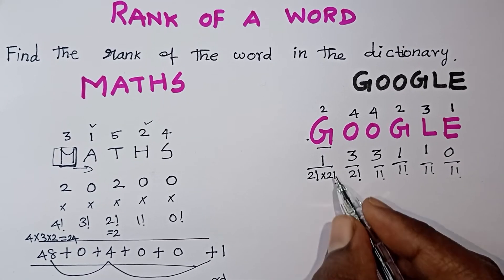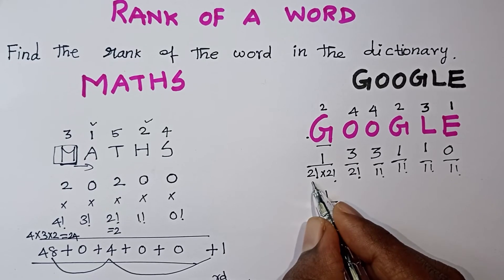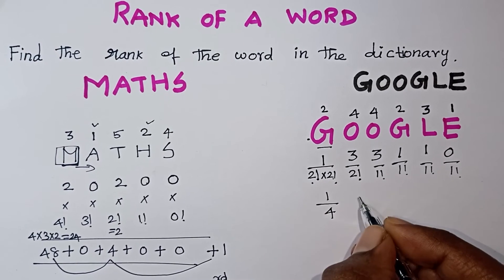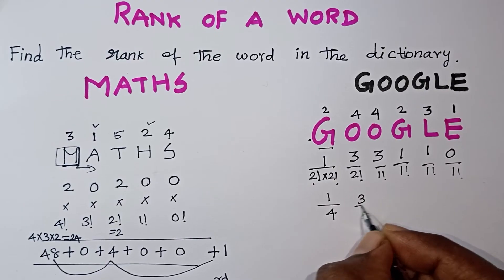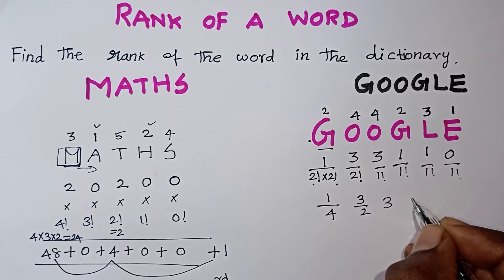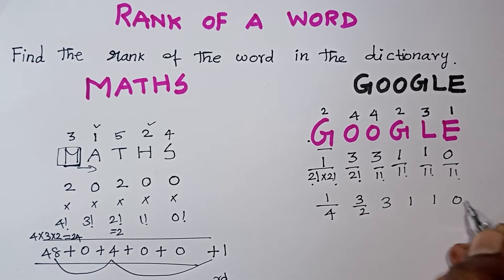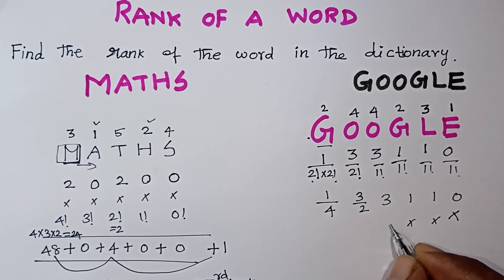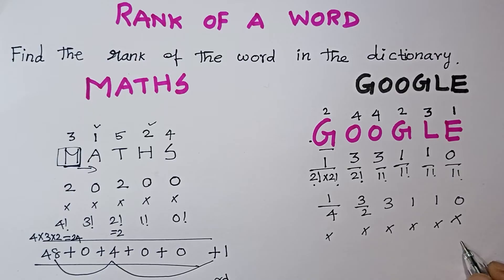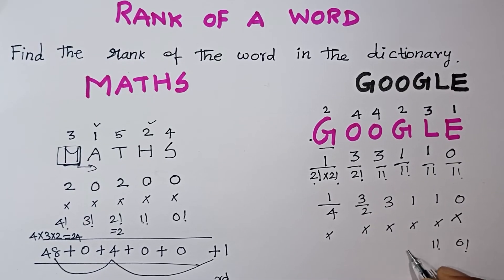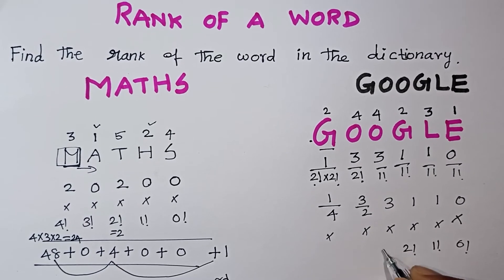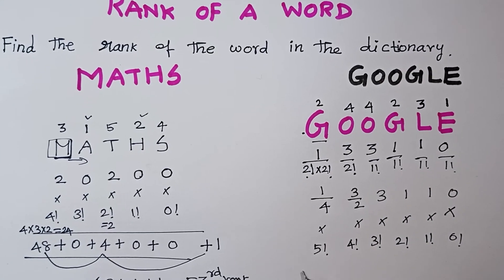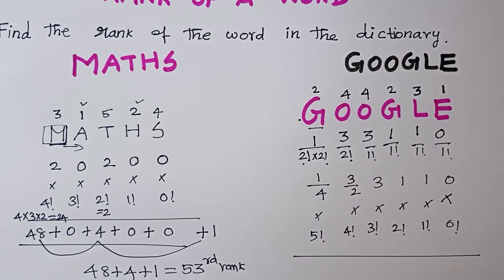Now we will calculate. One divided by two factorial — two factorial is 2. This gives 3 by 2, then 3, 1, 1, 0. How do we do it? Without repetition: 0 factorial, 1 factorial, 2 factorial, 3 factorial, 4 factorial, 5 factorial. If you calculate it, we can add them up.